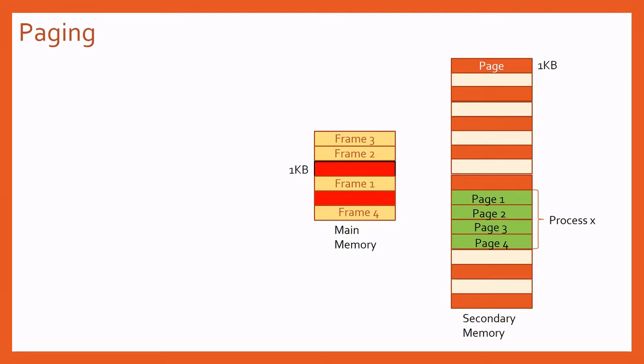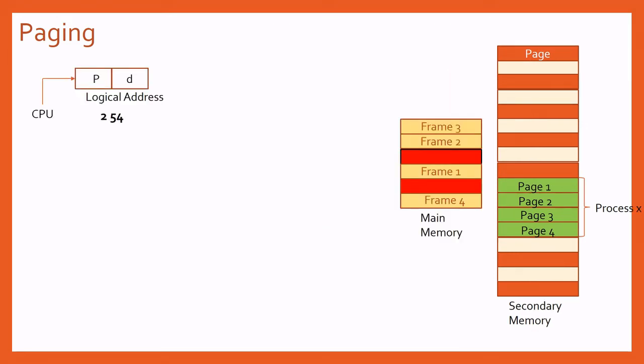Now we need to address the problem: the CPU generates a logical address based on secondary memory layout, but our data is in the main memory. So the CPU must perform address translation. The CPU generates a logical address which we divide into two parts: P stands for page number and D is the offset.